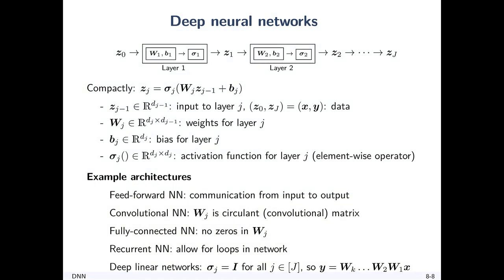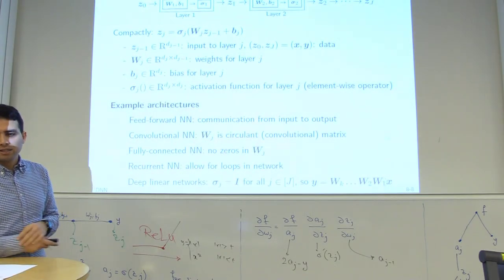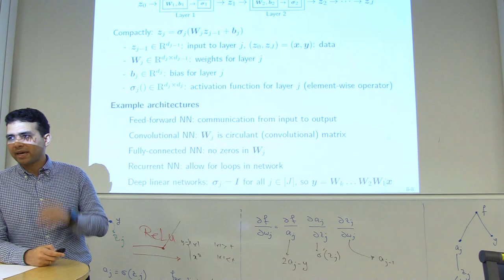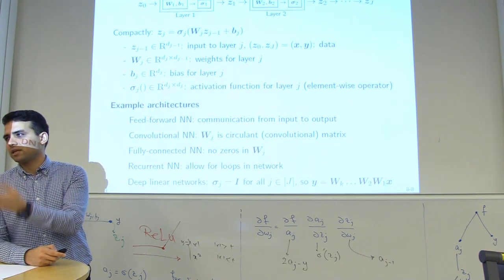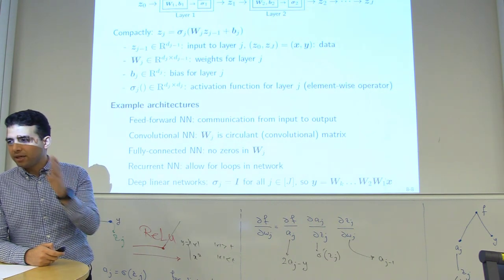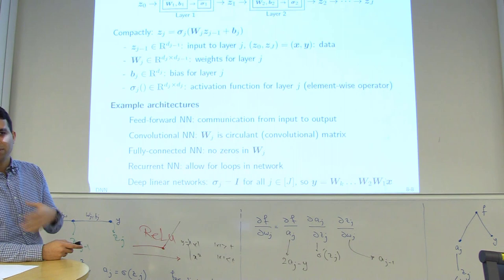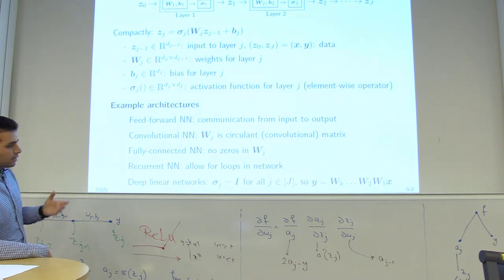In convolutional neural networks, the W_j matrices are convolutional. Without nonlinearity, a cascade of convolutions is just another convolution — you really need sigma to break that and increase expressive power. Fully connected neural networks have no zeros in W_j. Recurrent neural networks allow feedback loops. Deep linear networks drop both b and sigma — seemingly silly, but useful as a minimal working example that preserves non-convexity.